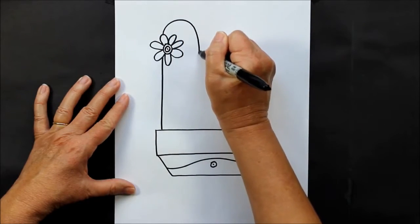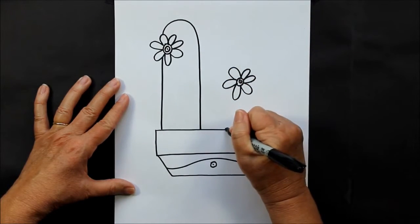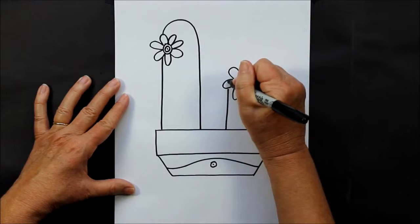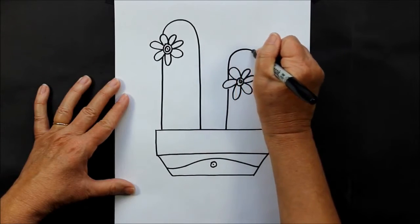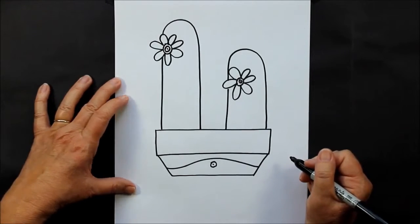We are going to come straight up and curve down just like that. Now cactus, they can get kind of prickly, so we are going to put some spines on our cactus.